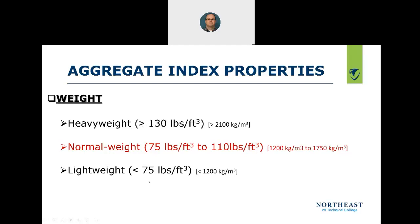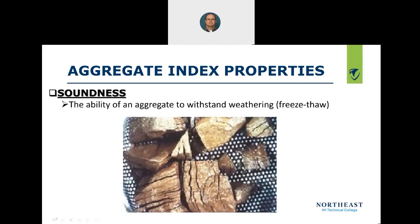Lightweight aggregate would be volcanic rock — they call it pumice — which has lots of air voids. Soundness is another aggregate index property: it's the ability of an aggregate to withstand weathering.